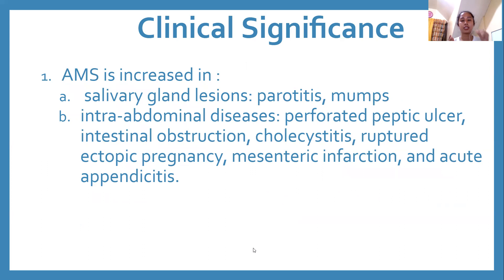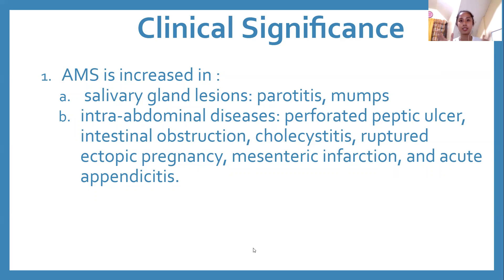Parotitis is inflammation of the parotid glands — one of the salivary glands. Mumps is a type of parotitis, caused by paramyxovirus. Other viral infections such as Epstein-Barr virus (kissing disease) also produce parotitis. Additional conditions that raise amylase include intra-abdominal diseases: perforated peptic ulcer, intestinal obstruction, cholecystitis, ruptured ectopic pregnancy, mesenteric infarction, and acute appendicitis. That's why we need lipase as a more specific marker.